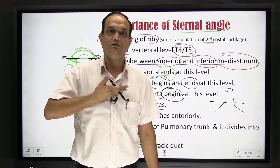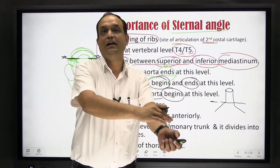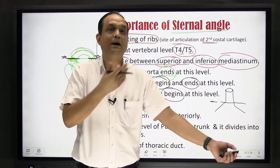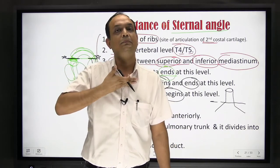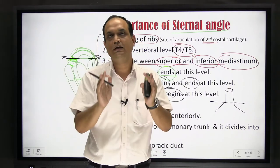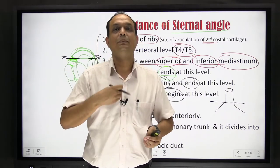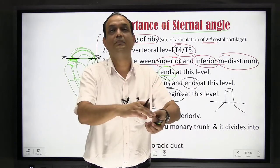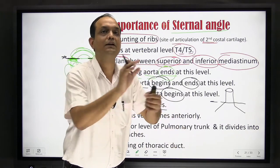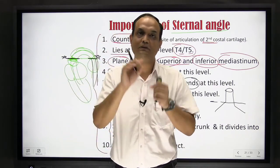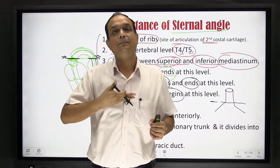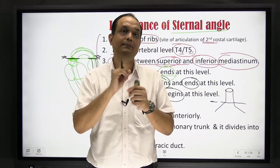So the dermatomes meeting at the sternal angle: the brachial plexus goes from C5 to T1, and the dermatomes after T1 are seen at the sternal angle level. That is why, whenever you study the anterior chest wall dermatomes, you will realize that the upper limb dermatomes appear to be missing — they are missing because they go into the upper limb as it develops. So this is again an important point: the sternal angle is used as the meeting point of cervical and thoracic dermatomes.